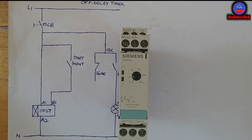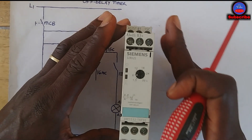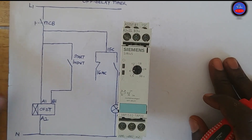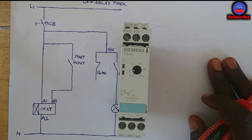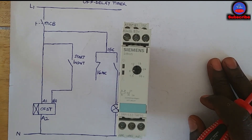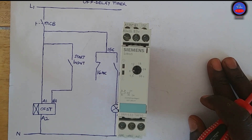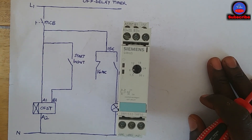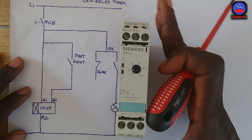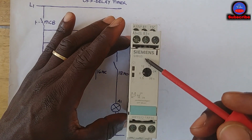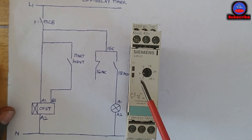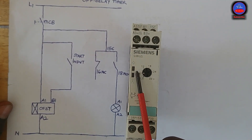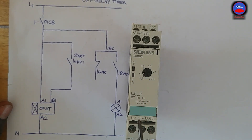Today we are going to look at off delay timers. Types of electronic timers: you have on delay and off delay timers. They are all solid state electronic relay timers. This timer here is manufactured by Cement, and this is the model number in case you want to purchase it.